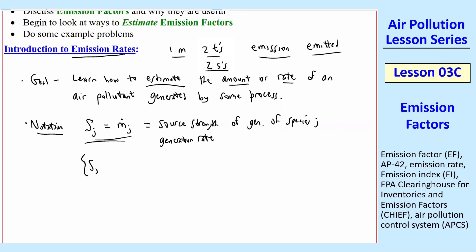I always like to give the dimensions of these things. So I'll use capital S. The dimensions are mass per time — it's a rate, a mass rate of generation. Capital S_J in brackets means the units are typically kilogram per day, gram per hour, milligram per second, et cetera.